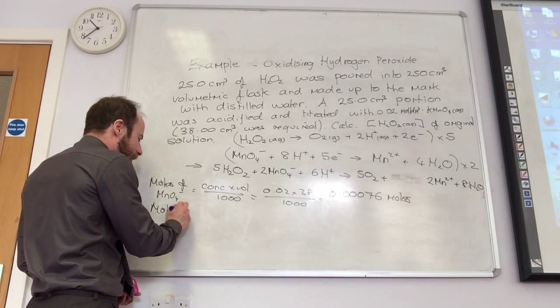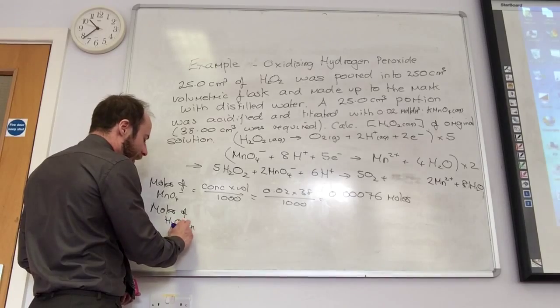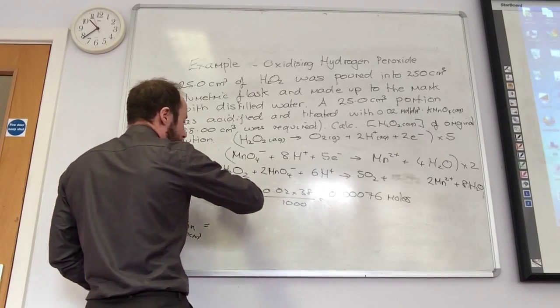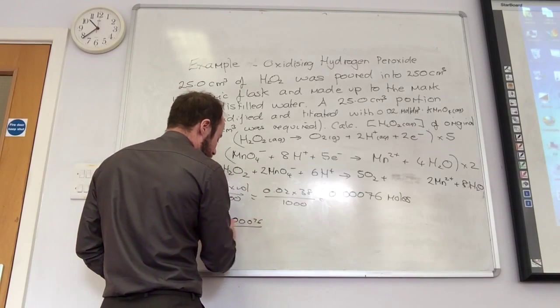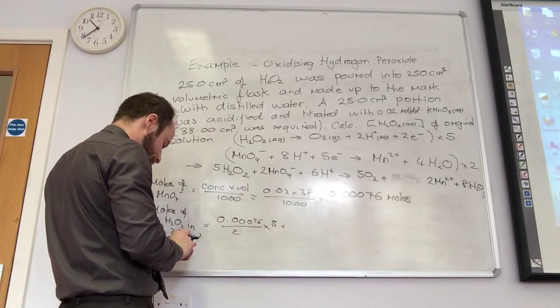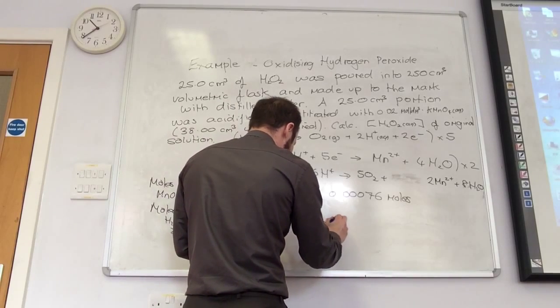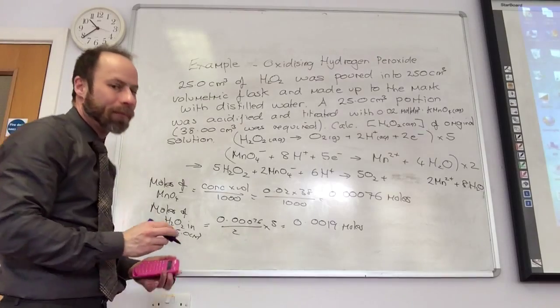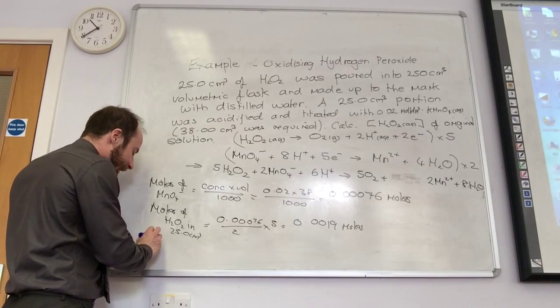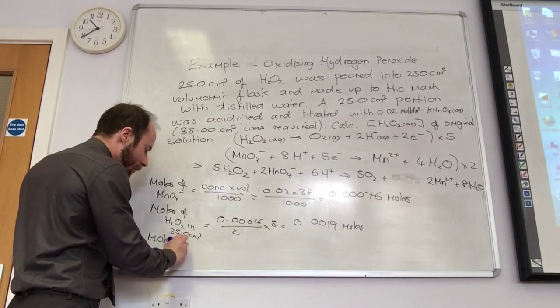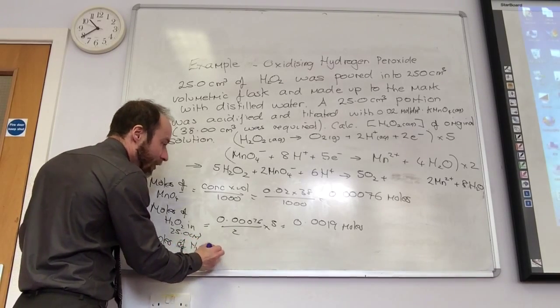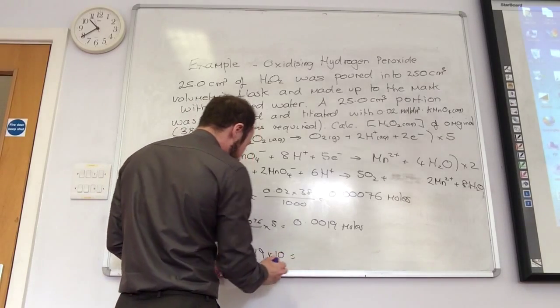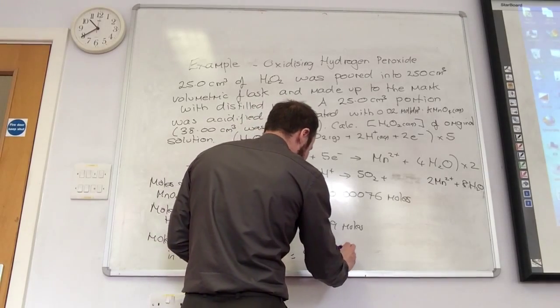So I've found out the moles. The next thing I'm going to do is find out the moles of H2O2 that was in my 25 cm cubed by using the titration. So what do I need to do to that number? For every 2 of those, 5 of these. Divide by 2 times by 5. Fabulous. Divide by 2 and times by 5, which gives me 0.0019. Right, okay, so that was in 25.